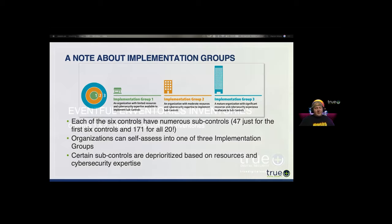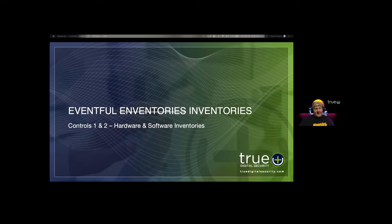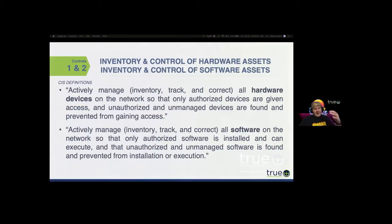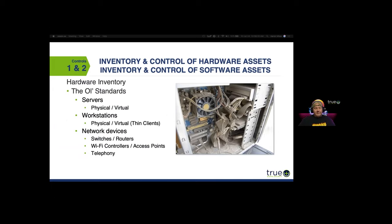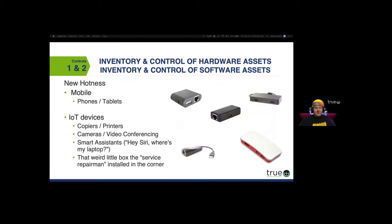Controls 1 and 2: hardware and software inventories. Basically, you want to inventory and control your hardware and software assets — track them, keep track of all this stuff, make sure it's all legitimate and supposed to be there, and get rid of what isn't. For hardware inventory, the old standards are servers, workstations, and network devices. You also have the new stuff: mobile phones and tablets.